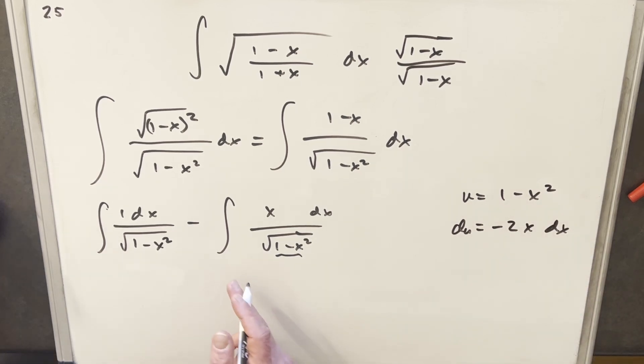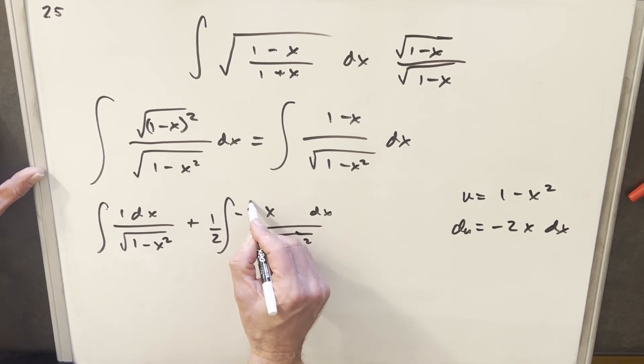And what I'm going to do is set that up so we have that exactly in our numerator here. So I'll bring the minus sign in here. I'll multiply by a 2 and multiply by a half. So I'm not changing it, but I'm setting up my numerator to be exactly our du.